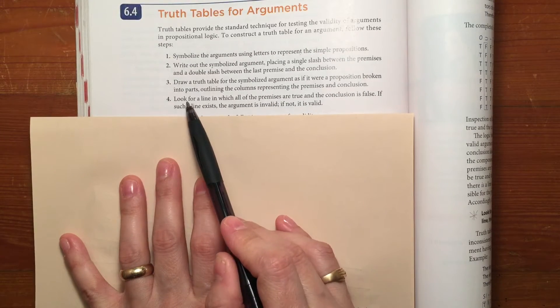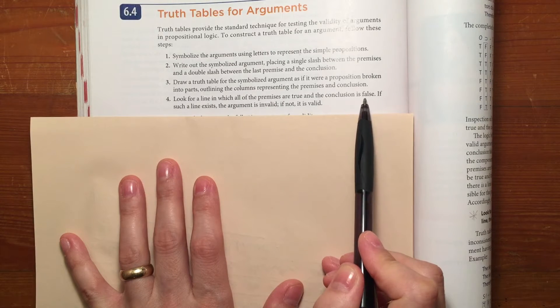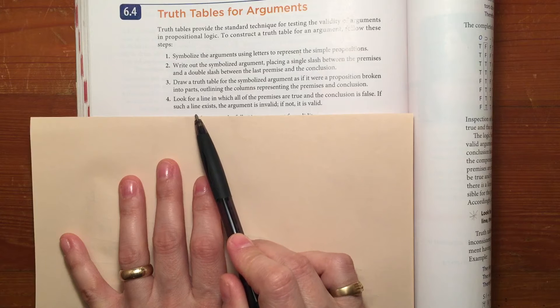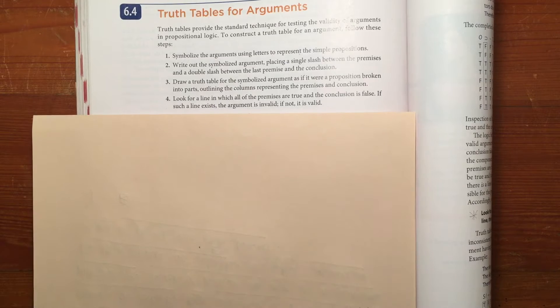Then we're going to do what's called the line test. We're going to look for a line in which all of the premises are true and the conclusion is false. If you find that line, then the argument is invalid. If you do not find that line, it is valid.